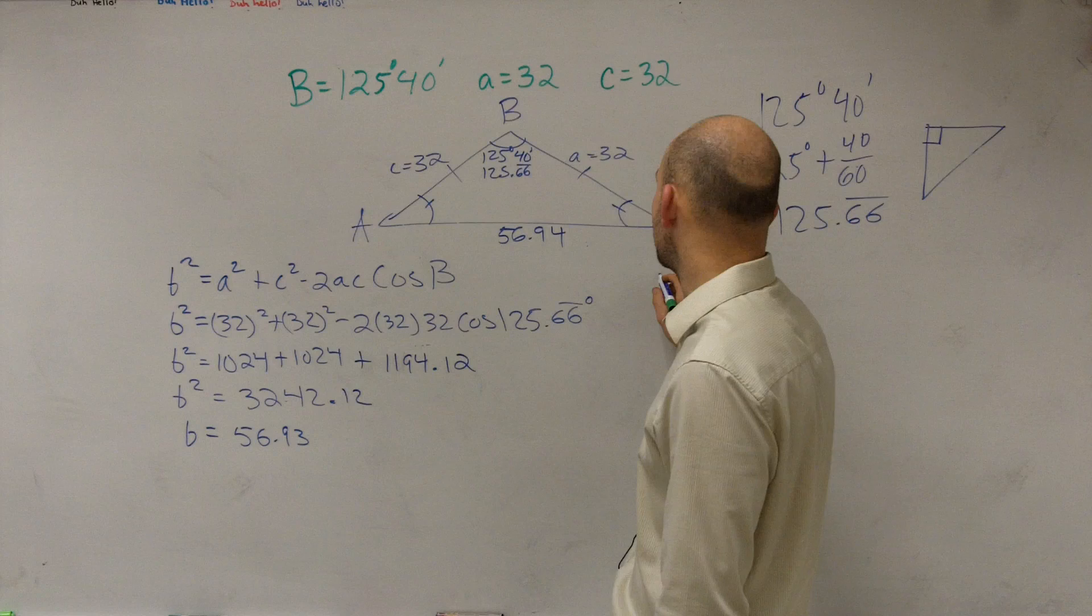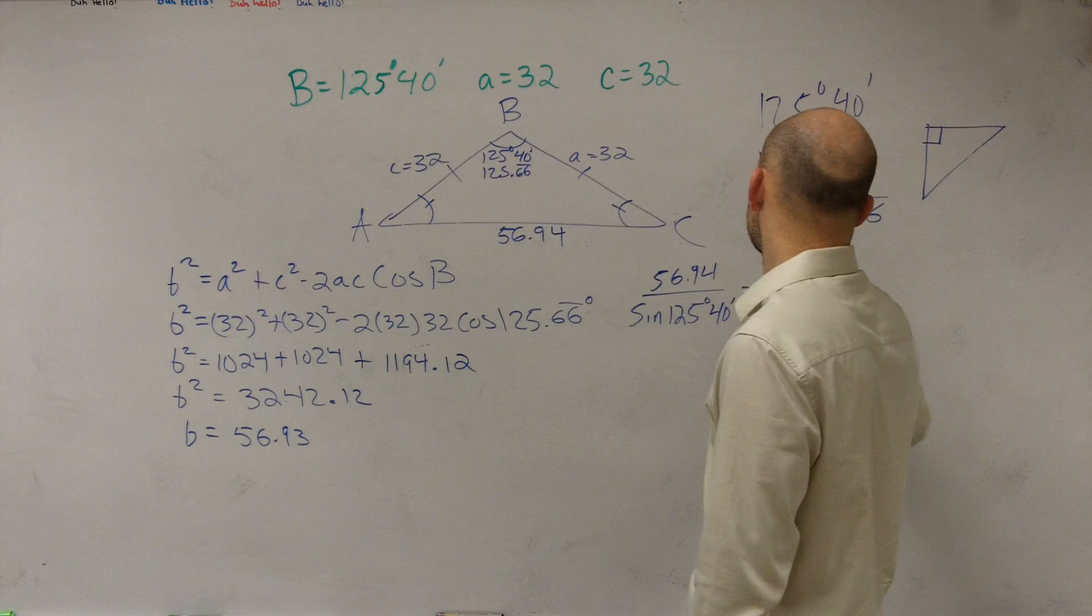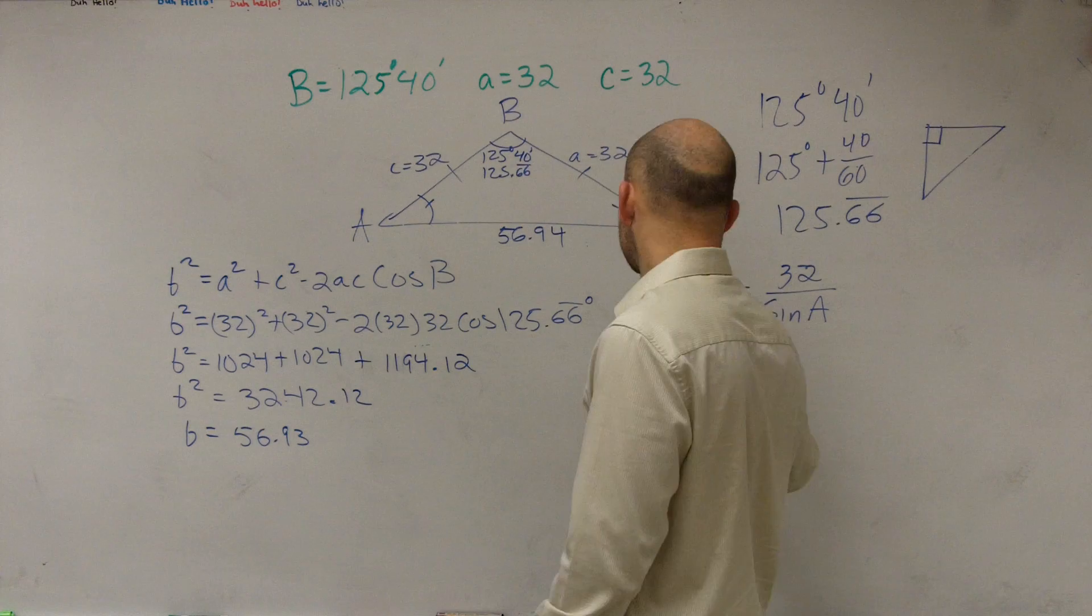So to do law of signs, I could say, 56.94 over the sign of 125 degrees and 40 minutes and 40 minutes equals 32 over the sign of a. And I can easily just plug all this in my calculator because I've been doing this over and over and over again.